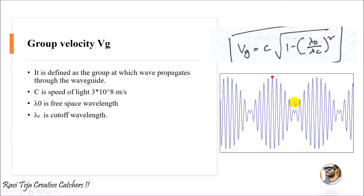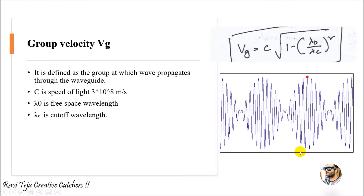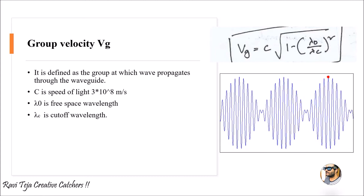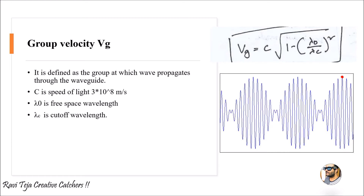We can observe a group of waves traveling in a waveguide. Group velocity vg is defined as the velocity at which the group of waves propagates through a waveguide. It is given by vg = c × √(1 − (λ₀/λc)²), where c is the speed of light (3 × 10⁸ m/s), λ₀ is the free-space wavelength, and λc is the cutoff wavelength.